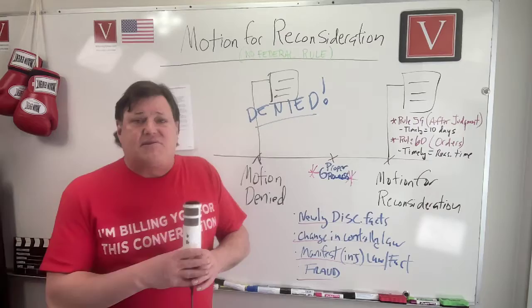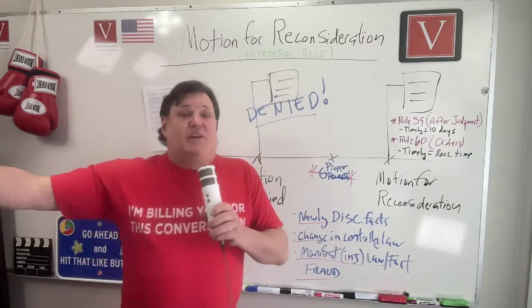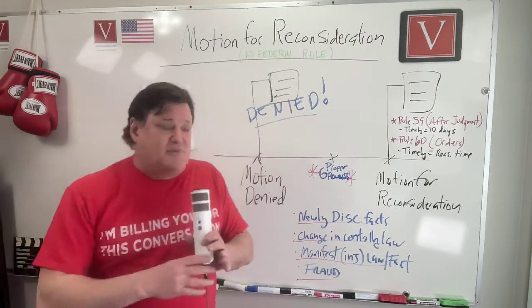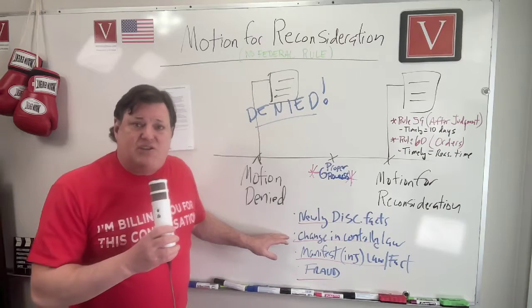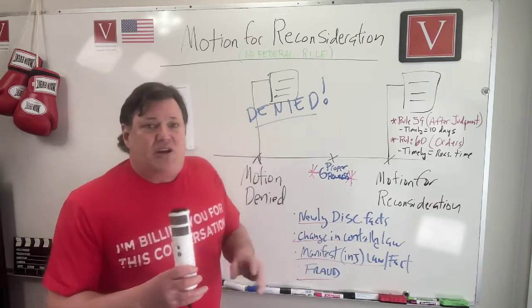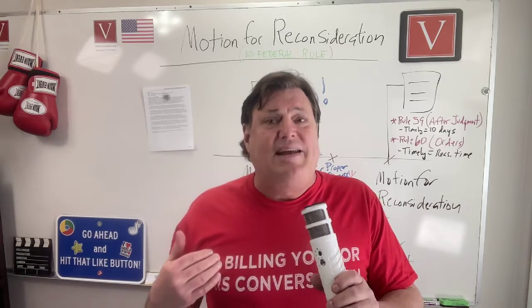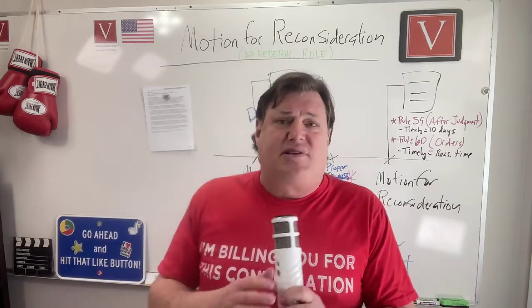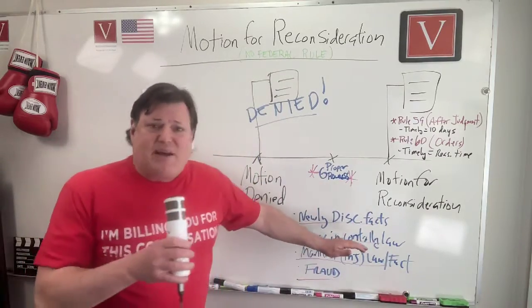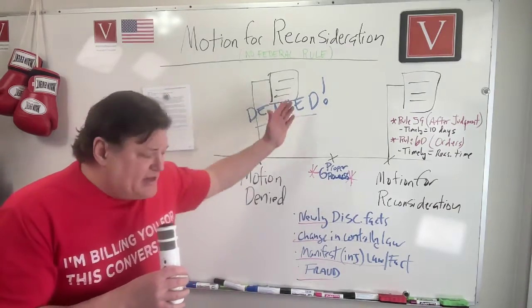Newly discovered relevant material facts that would change the outcome is one ground. A change in the controlling law is another — say you file a motion to dismiss, the judge says denied, and then a new Supreme Court decision comes down. You may say, 'Judge, there's a change in the controlling law, please reconsider.' Manifest injustice — where the judge so obviously made the wrong call on the law and the facts — is also a ground. Use these very sparingly. In 18 years of litigating hundreds of cases, I don't think I've ever filed one. Fraud on the court is also a ground.